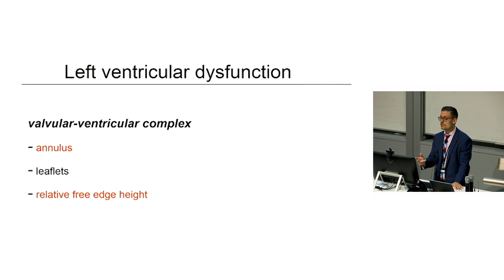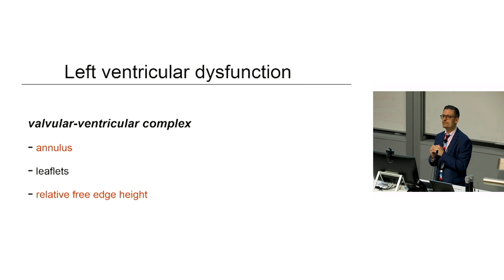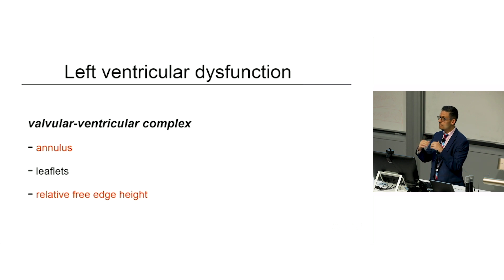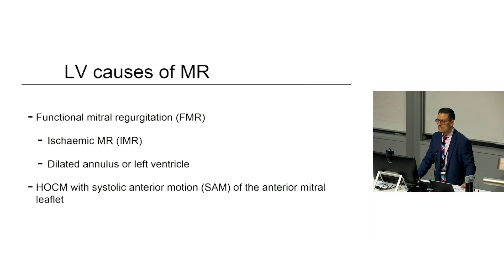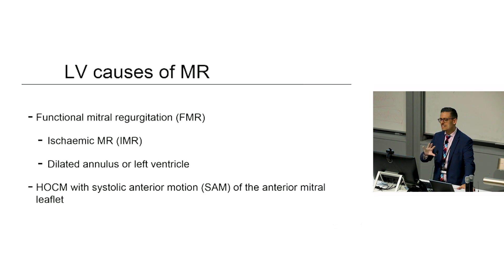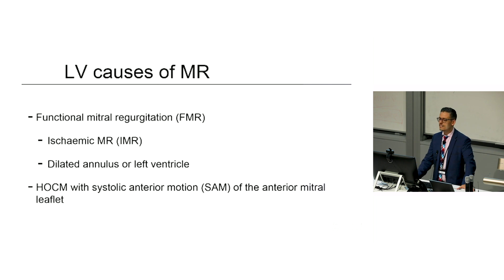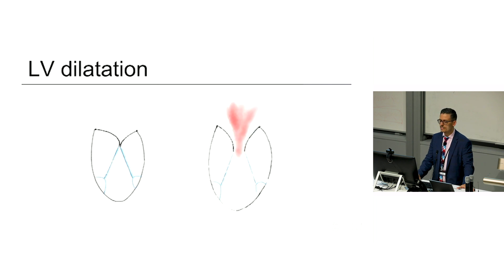Left ventricular dysfunction results in annular dilatation and can also change the relative free edge height. LV causes of MR — this functional mitral regurgitation with relatively normal leaflets and cord apparatus — can be divided into ischemic MR and the dilated annulus or left ventricle. HOCM, with systolic anterior motion, is also an LV cause of MR, which I'm going to leave to the side.